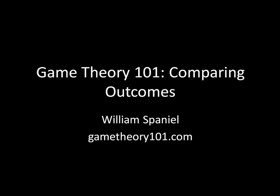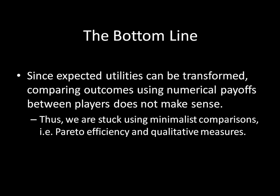Hi, I'm William Spaniel. Let's learn some game theory. Today we're going to be looking at comparing outcomes, and we're going to see why comparing outcomes is a fairly difficult thing to do in our line of work. To skip ahead to the bottom line: because expected utilities can be transformed, as we've seen in a previous video, comparing outcomes using the numerical payoffs between players doesn't really make very much sense. As a result, we're stuck using minimalist comparisons like Pareto efficiency and qualitative measures to do that job for us. I'm going to go over a bunch of examples, and that should clarify things greatly.